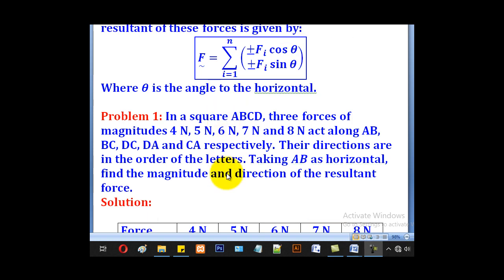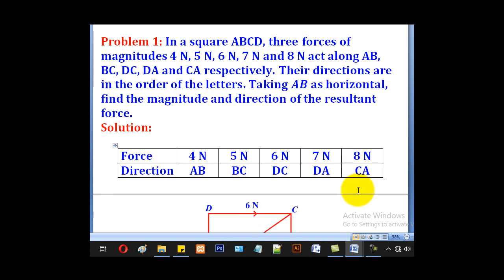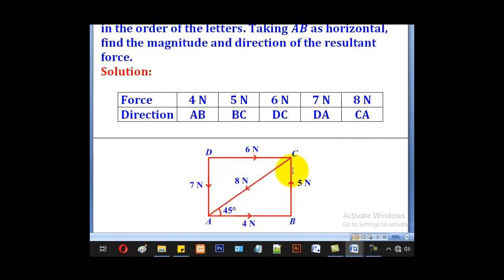We have added another part. Instead of finding only the magnitude, we shall find both magnitude and direction of the resultant force. The first step is to list them down: 4 corresponds to AB, 5 to BC, 6 to DC, 7 to DA, and 8 to CA. After doing that, we shall now draw our square and label the letters in an anti-clockwise direction, ABCD, starting with AB as the horizontal.